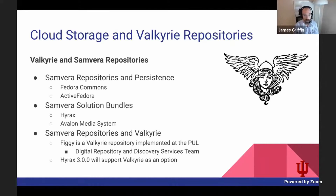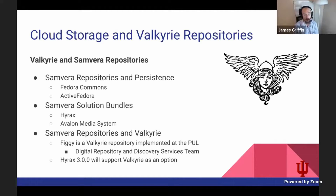For those familiar with the Hyrax project, up until the introduction and popularization of the Valkyrie gem, Fedora Commons — a separate but also open source application — has been used as the primary persistence solution for saving not only binary files, but also metadata associated with these files. It has been this standalone Java application used to write primarily to one's own storage solution. One would use Fedora Commons to save the actual file or collection of files within a Samvera repository, with a very common configuration being writing directly to the file system on the server where the Fedora Commons Java application is deployed.